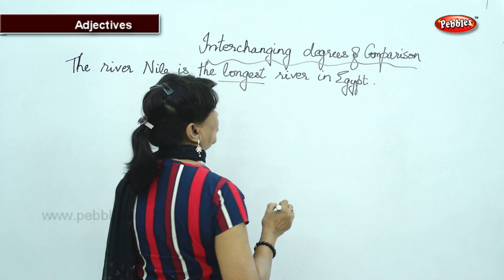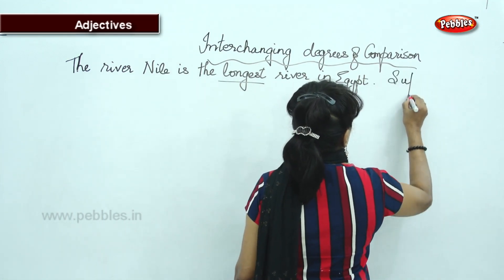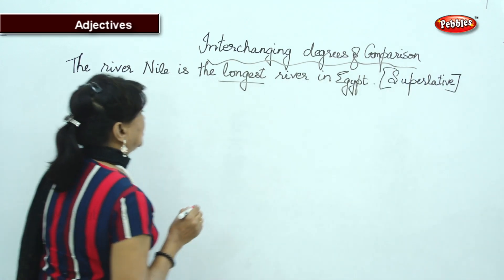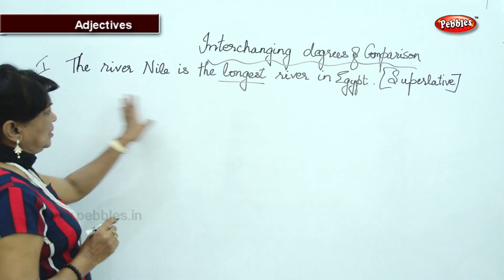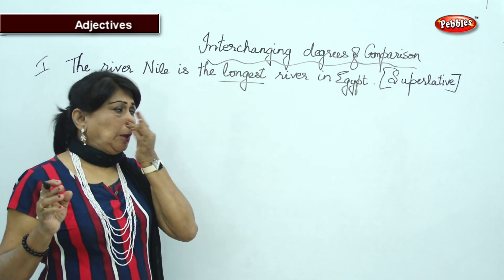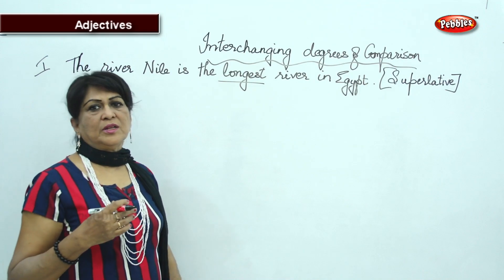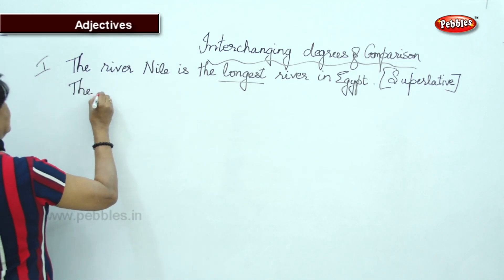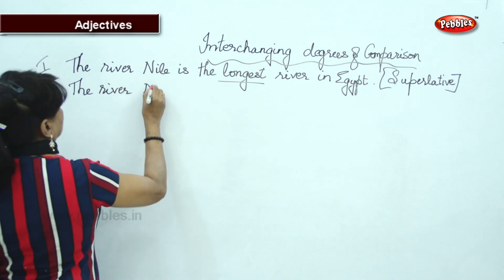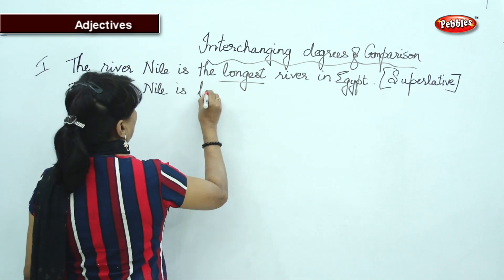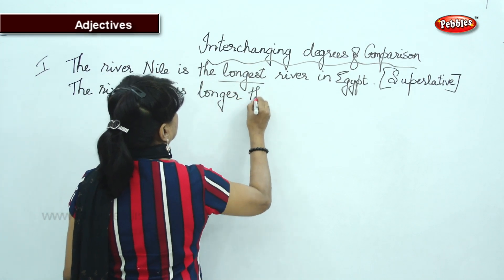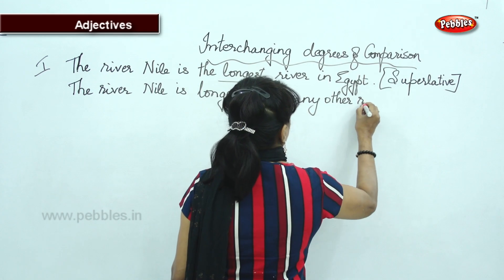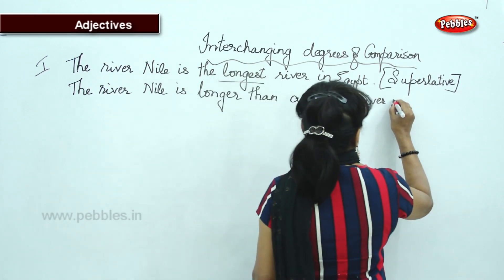The longest — now what degree is it? Superlative, isn't it? How do you change this into comparative? 'The river Nile is longer than any other river in Egypt.' The river Nile is in Egypt, so we use 'any other.'